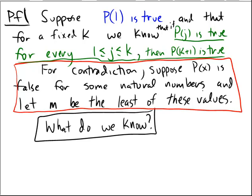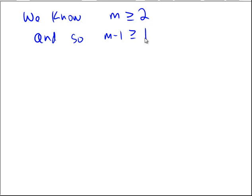So, what can we say about M? Well, for one thing, since we know that P(1) is true, we know that, what's true about M? M has got to be at least as big as 2, because we know that P(1) is true. And, so, what do we get? That M minus 1 must be bigger than or equal to 1.